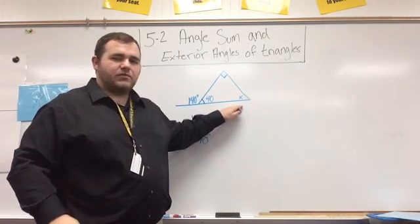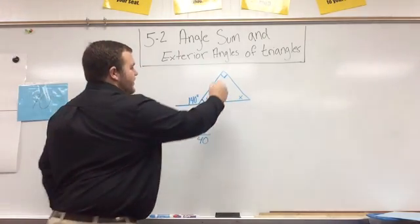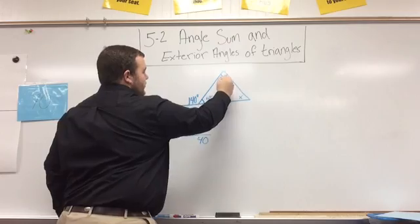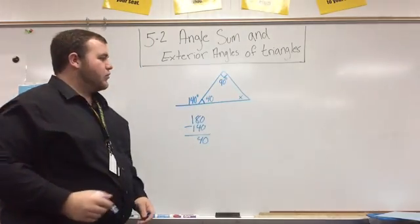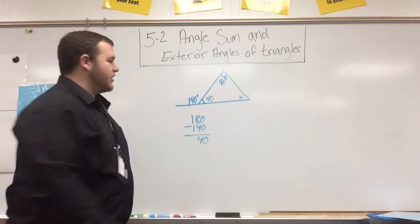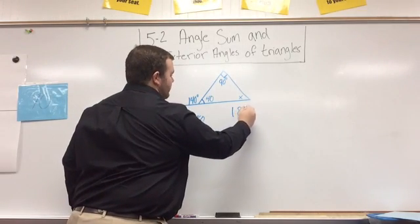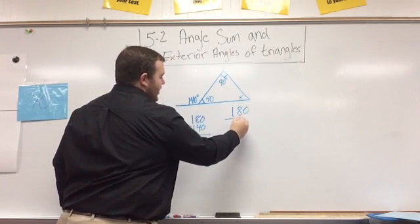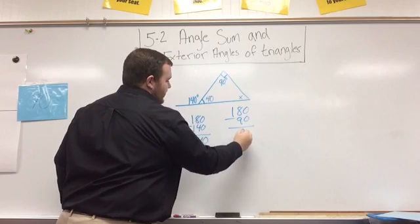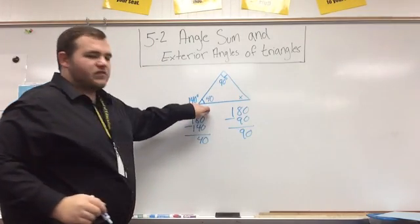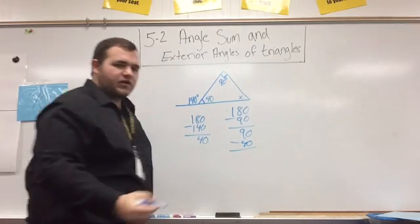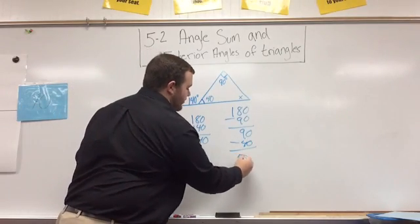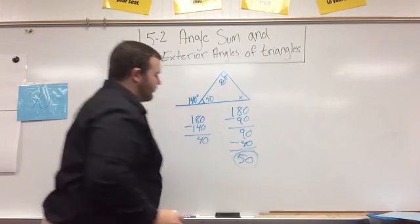So now we're going to just do like we did before. We have this one is 90 because it's a right angle. This one's 40, and we need to find X. Well, we know the three interior angles add up to 180, so we'll take 180. We can subtract 90, and we just get 90. Take out this 40, so subtract 40. 90 minus 40, we get 50 again.